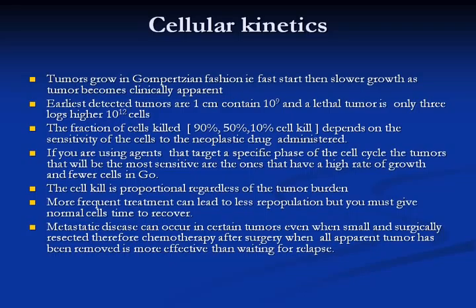More frequent treatment can lead to less tumor repopulation, but normal cells must be given time to recover. Metastatic disease can occur even when tumors are small and surgically resected, and therefore chemotherapy after surgery — when all apparent disease has been removed — is more effective than waiting for relapse. This is the rationale for adjuvant chemotherapy.